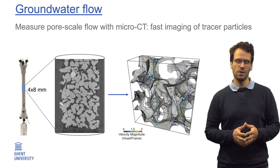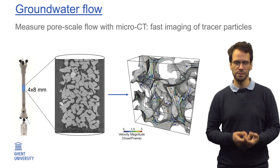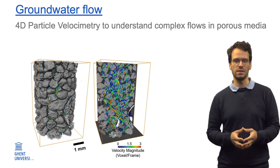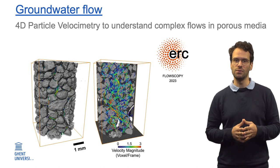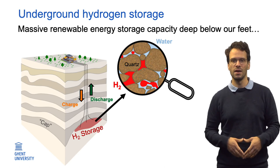Let's start with groundwater flow, where complex fluid dynamics take place. We recently developed a method to visualize such fluid flows in porous materials in 3D, by making many fast microCT scans to track small tracer particles in the flow. By determining each particle's flow path, we can calculate 3D flow velocities inside the material and how this changes over time. We are now developing this technique further in my ERC starting grant, Flowscopy. This is really important to improve our models of how pollutants spread in the ground and how we best clean them up.